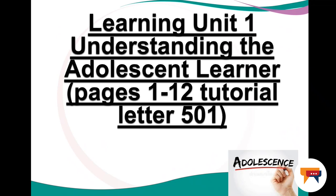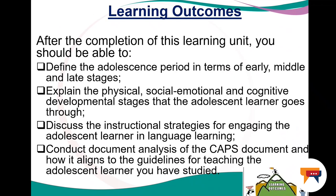Today our focus is going to be on Learning Unit 1 of Tutorial Letter 501, Understanding the Adolescent Learner, pages 1 to 12. The learning outcomes for this first learning unit are: define the adolescence period in terms of early, middle and late stages; explain the physical, social, emotional and cognitive developmental stages that the adolescent learner goes through; and finally, conduct document analysis of the CAPS document and how it aligns to the guidelines for teaching the adolescent learner that you have studied. Please keep these outcomes in mind as we go through the learning unit.